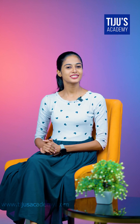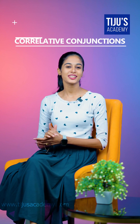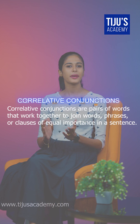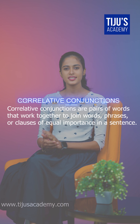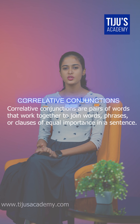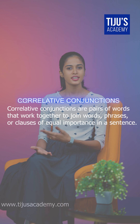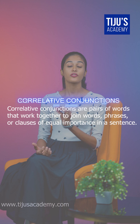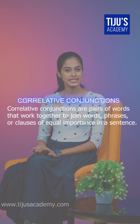Hey all! Today, let's talk about correlative conjunctions. Correlative conjunctions are pairs of words that work together to join words, phrases, or clauses of equal importance in a sentence. Let's see the main correlative conjunctions with examples.